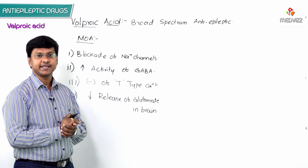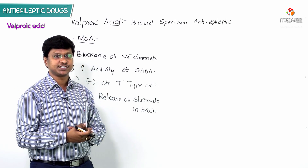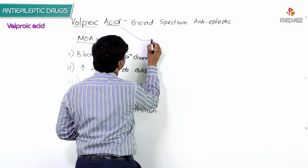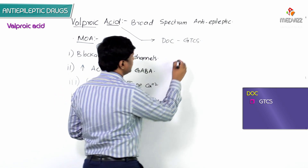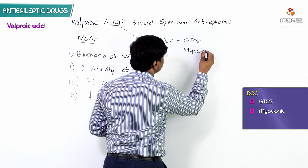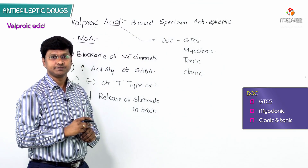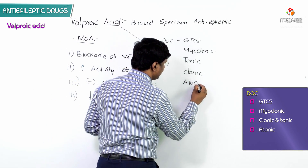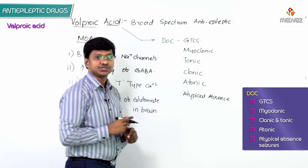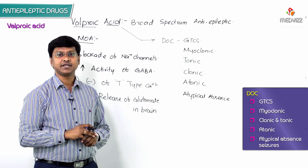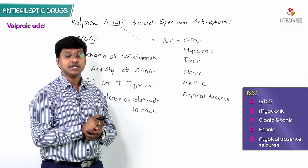Valproic acid is used as the drug of choice in GTCS (generalized tonic-clonic seizures), myoclonic epilepsy, tonic and clonic epilepsy, atonic seizures, and atypical absence seizures. In all these seizure types, valproic acid is considered the drug of choice.